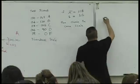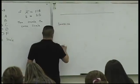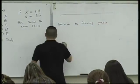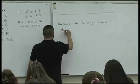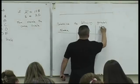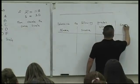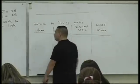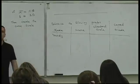Let's create the curve scale. We'll set up a table with name, score, standard scale grade, and curved scale grade. For example, let's say someone named Yowzdi — let's see what score she got and determine her grade under both scales.